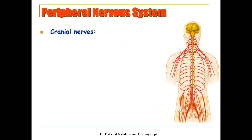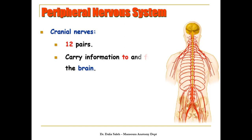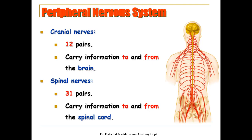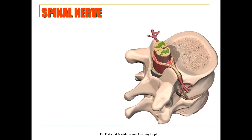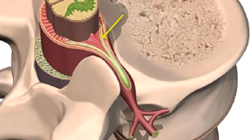The peripheral nervous system is formed of 12 pairs of cranial nerves. They carry information to and from the brain — that is, they carry sensory information to the brain and motor information from the brain. The spinal nerves are 31 pairs and also carry information to and from the spinal cord. For the spinal nerves, each has two roots: one called the ventral root and the other called the dorsal root. The ventral root is motor and the dorsal root is sensory, making the spinal nerve a mixed nerve.